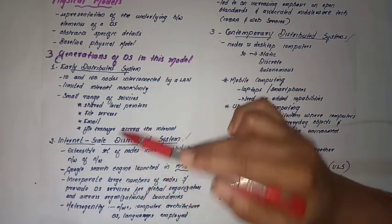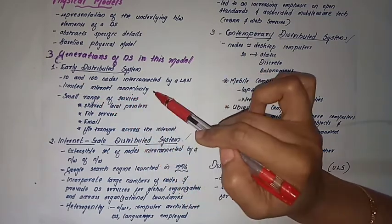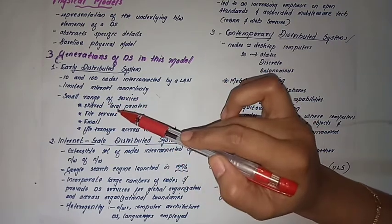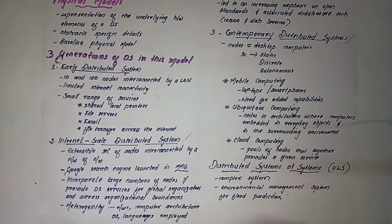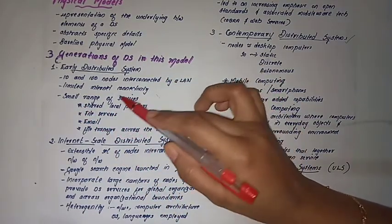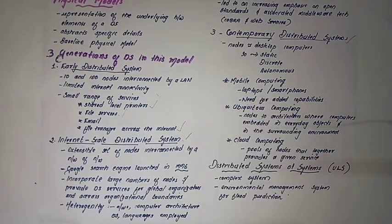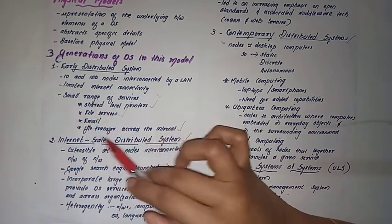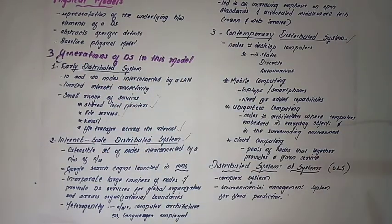In the early days, we used communicating elements with limited internet connectivity and a small range of services. These services included local printers, file servers, email servers, and file transfers across the internet — sharing of services among 10 to 100 nodes.